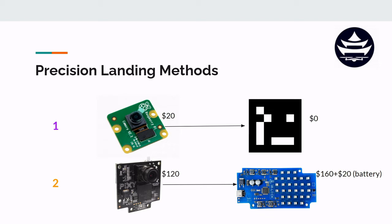One of the biggest differences between these two methods is cost. The first method is extremely cheap — all you need is a camera around $20 if you're using a Pi cam, and the target on the ground just costs as much as your paper, because you can print the ArUco marker onto a piece of paper. You don't need to power it with a battery or purchase it from a company. The second method's camera is $120, specially fitted with an IR lens, and the beacon is a complex IR-emitting device that needs to be powered by a LiPo battery.